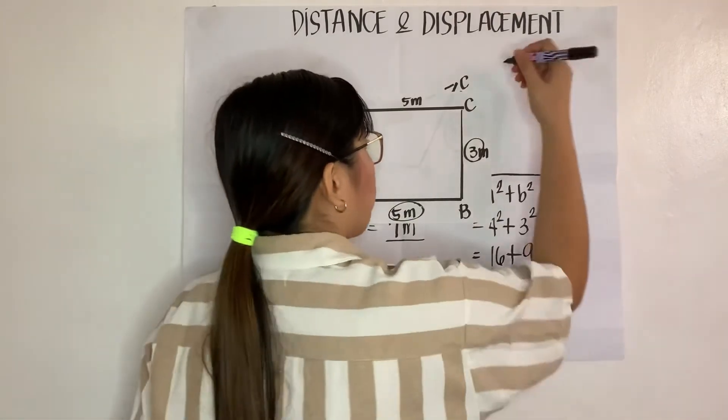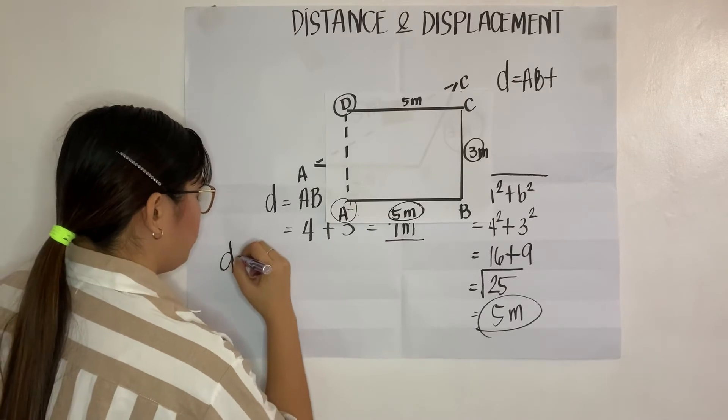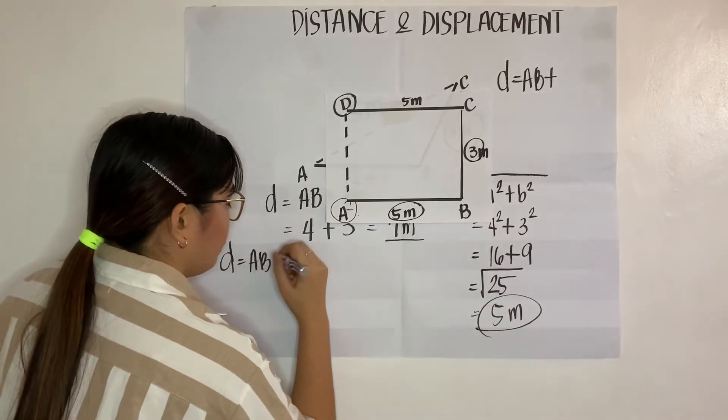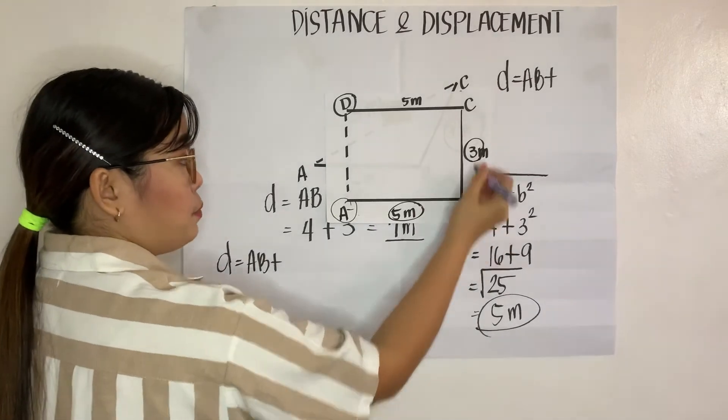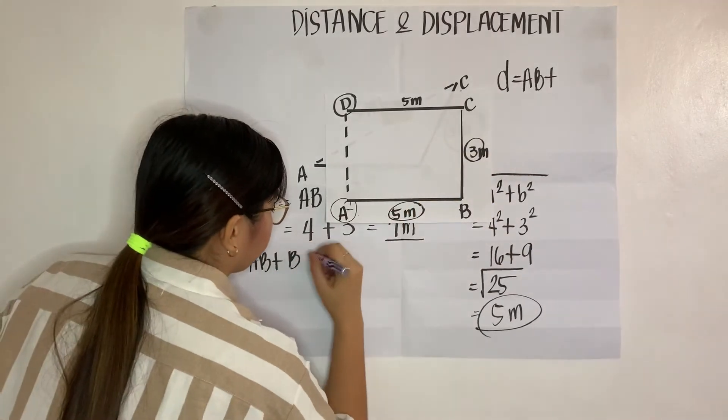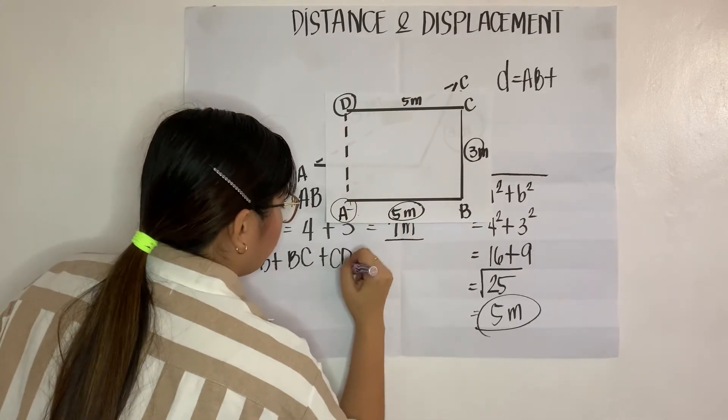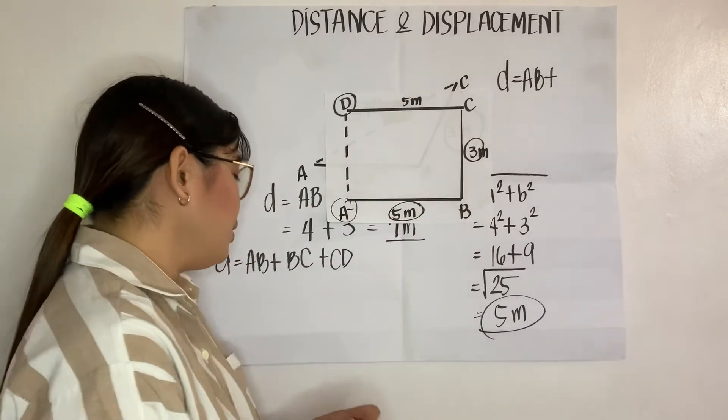Okay. So, distance will be AB plus BC plus CD.